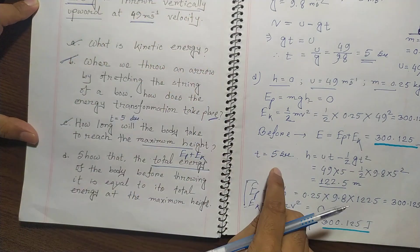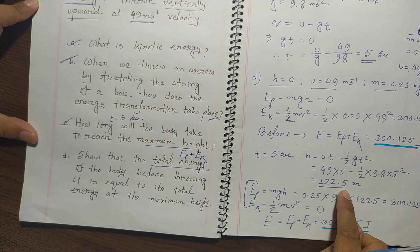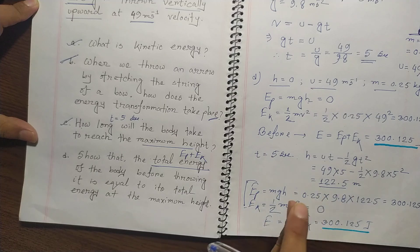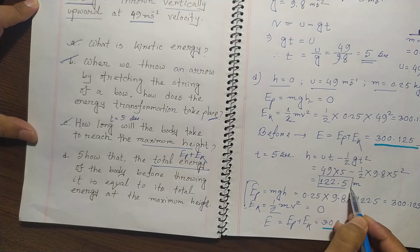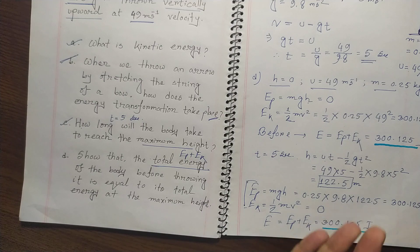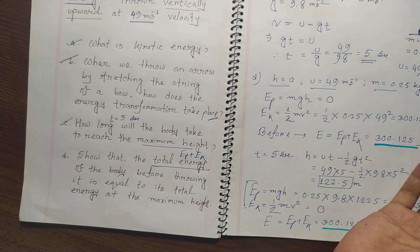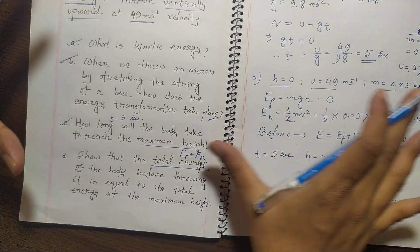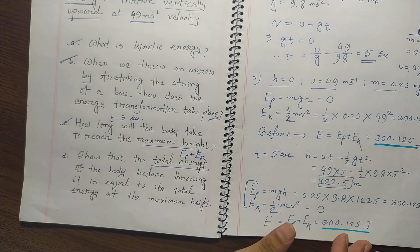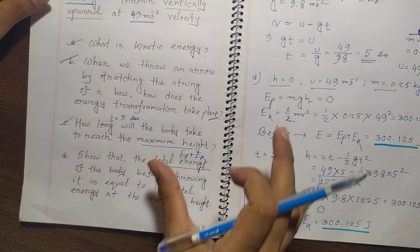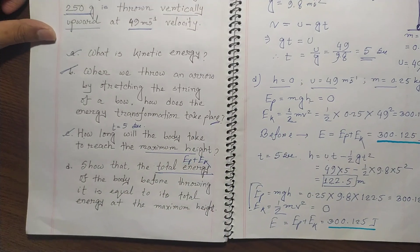We know from part C that it took 5 seconds to reach the maximum height of 122.5 meters, which we used to calculate the potential energy. If you face any trouble with this type of mathematics, let me know on my Facebook page or leave a comment on YouTube — I'm ready to answer all your questions. See you in the next tutorial. Take care, stay well, bye.